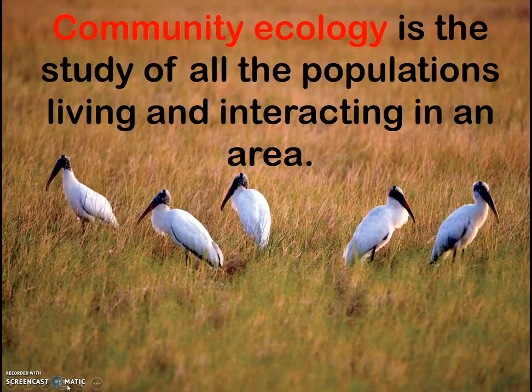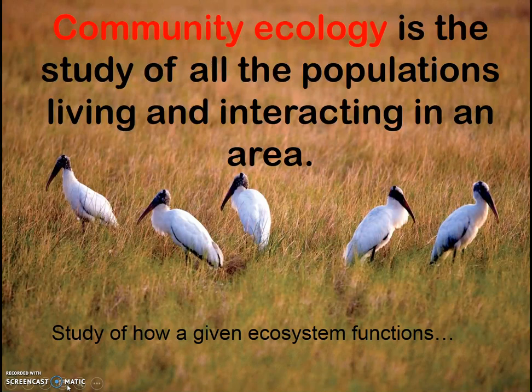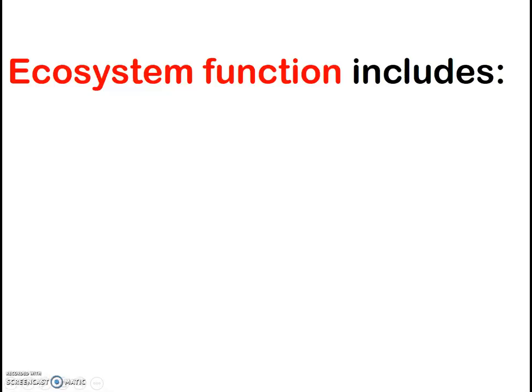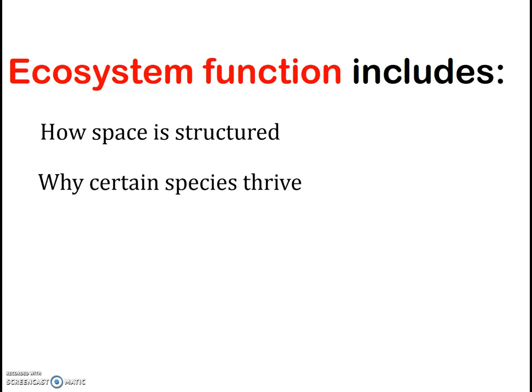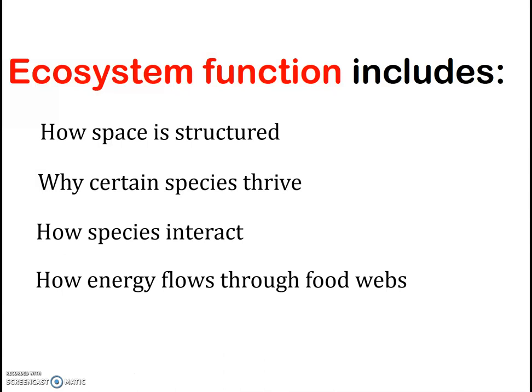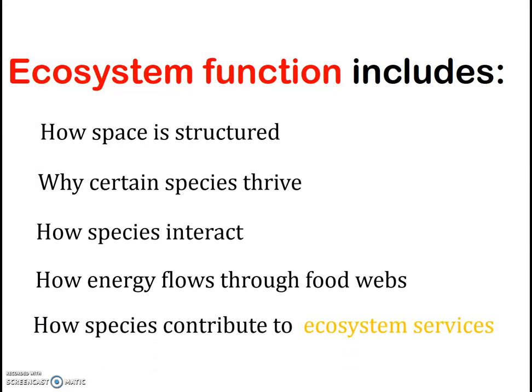Another way of defining community ecology is to say that it is the study of how an ecosystem functions. Ecosystem function includes things like how the space is structured, why certain species thrive and others do not, how species interact, how energy flows through food webs, and how the species contribute to ecosystem services.